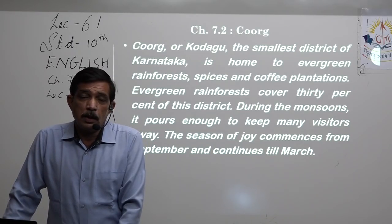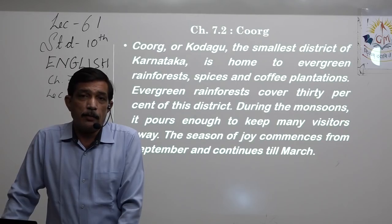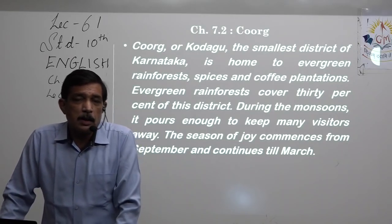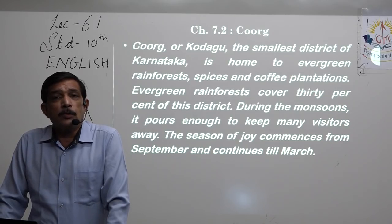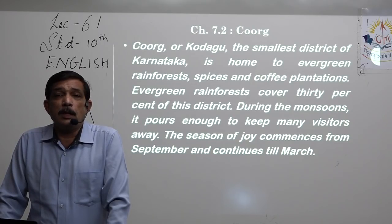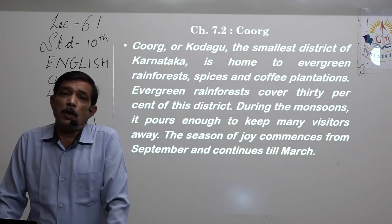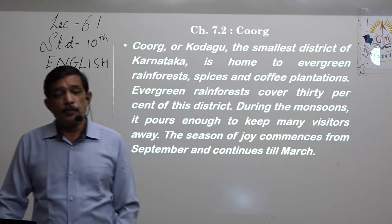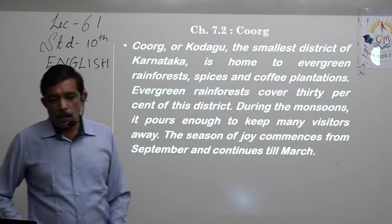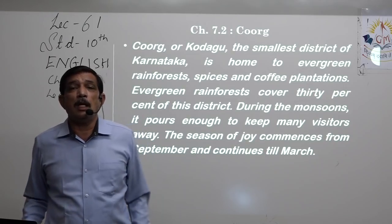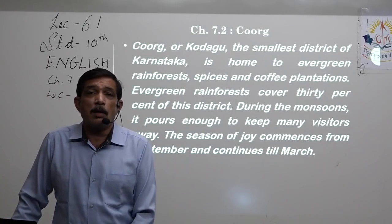The monsoon arrives in Kerala from the first of June, then advances upward and arrives in Karnataka approximately by the first or second week of June. It rains so heavily that outside people keep away from these areas, whereas the locals know how to live there in the rainy days and they love it. The beauty of Coorg changes completely once the monsoon season ends.